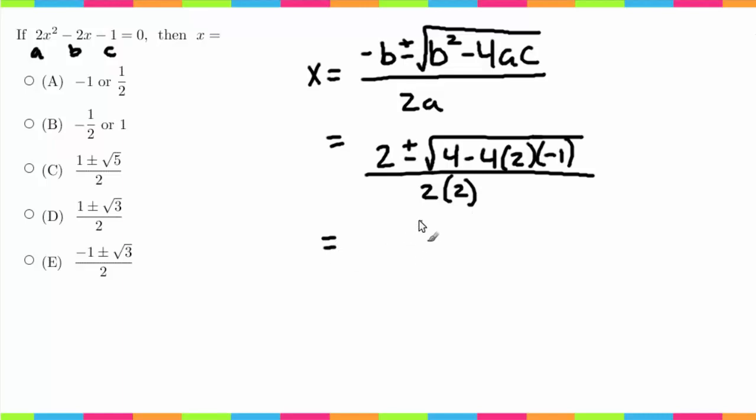Now we just have to simplify. So 2 plus or minus the square root of 4. I like to figure out what this sign is first, so negative times a negative is a positive, and then 4 times 2 is 8, 8 times 1 is just 8, so that's plus 8 over 4.